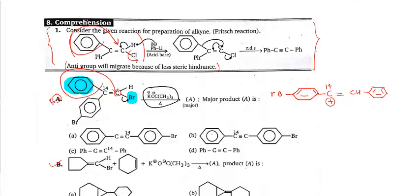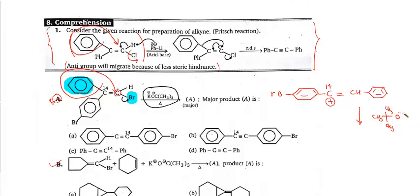Now the base is still in the system. The tendency of a base is to take hydrogen. Potassium tert-butoxide is a base — draw it as CS₃CO with O⁻K⁺. Let me correct: O⁻K⁺. The tendency of this base is to take hydrogen, so hydrogen will leave from the neighboring carbon.